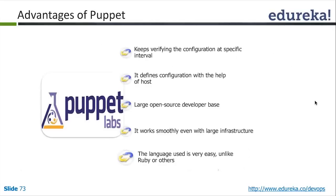Advantages of Puppet: it keeps verifying configuration at specific intervals, it has a large open-source developer base, and it works smoothly even with large configurations. The language used is easy to work with. Puppet is built on Ruby, but certain portions are also using a language called Clojure — a language built on top of the JVM, which requires JVM to run. There is some architectural redesign happening within Puppet in this regard.